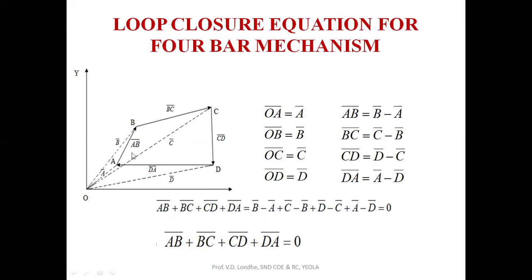AB bar is the position of B with respect to A. BC bar is the position of C with respect to B. CD bar is the position of D with respect to C. DA bar is the position of A with respect to D. The reference point O is the origin, and all points A, B, C, and D are located with respect to the x-y axis origin.